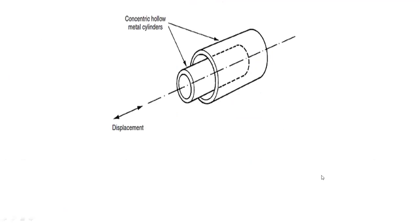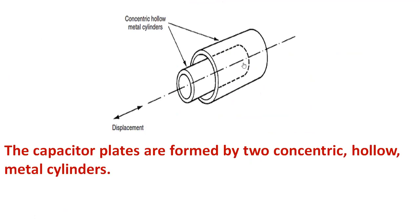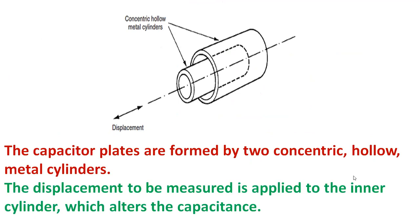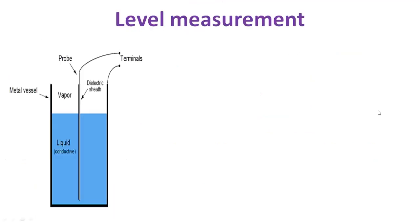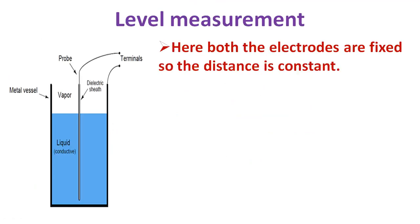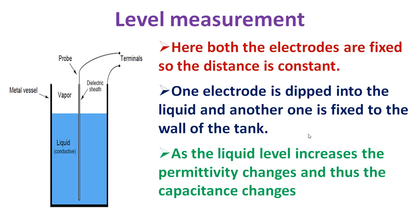The capacitor plates are also realized using two concentric hollow metal cylinders, as seen in the figure. The displacement to be measured is applied to the inner cylinder, which alters the capacitance as it moves to and fro. We also have the level measurement example. Both electrodes are fixed so the distance is constant. One electrode is dipped into the liquid and another is fixed to the wall of the tank. As the liquid level increases, the permittivity changes because the permittivity of the liquid is different from that of air. As the permittivity of the medium between the two electrodes changes, the capacitance changes — and that is how we measure the change in liquid level.